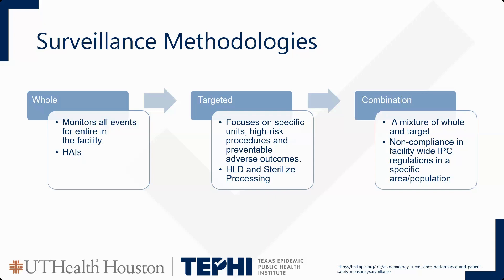Targeted surveillance activities focus on specific areas, processes, or procedures deemed high risk for potential adverse events or negative outcomes that we are closely monitoring to reduce the risk of potential infection or harm. Examples include high-level disinfection and sterile processing — tracing an item from the procedure room all the way through to reduce the risk of bacterial or pathogen exposure to the next patient.